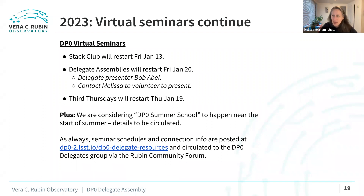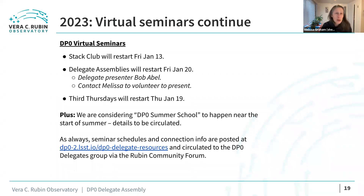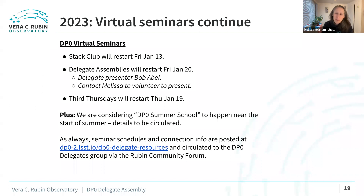One other thing happening in 2023: we will be at the AAS. There will be a Rubin Observatory booth in the exhibit hall next to the NOIRLab booth. Come say hi, tell us you're a delegate, tell us about what you've been working on. If you have a poster related to DP0, let us know because we like to come and see them. Also come to the Rubin town hall — it is Wednesday evening at 6 PM. There will be a bunch of announcements, mostly mingling, snacks, and drinks.